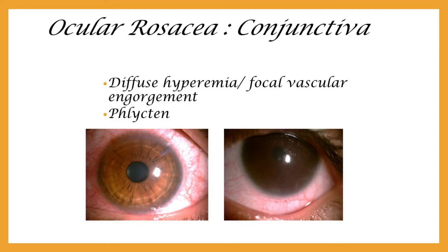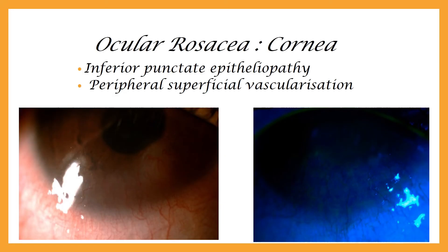Conjunctival pathology is secondary to MGD. Congestion may be limited to the lower bulbar part or it may be diffuse. Conjunctival follicles, though not very common, can be seen. In the cornea, superficial punctate erosions of the lower part is the most common finding.